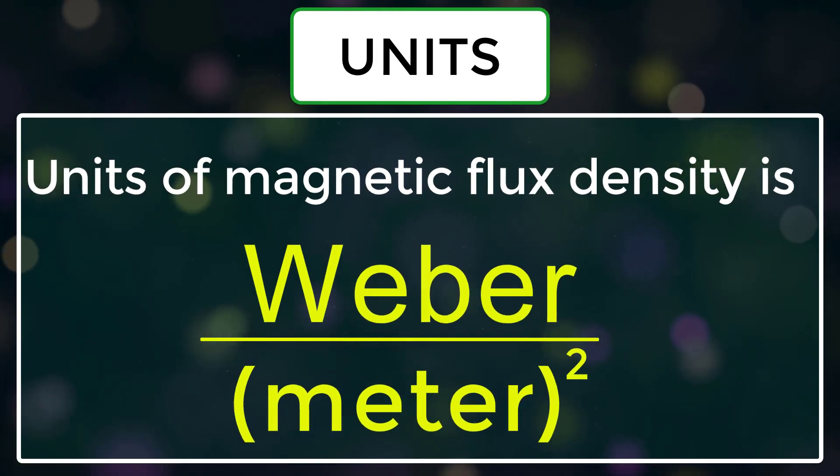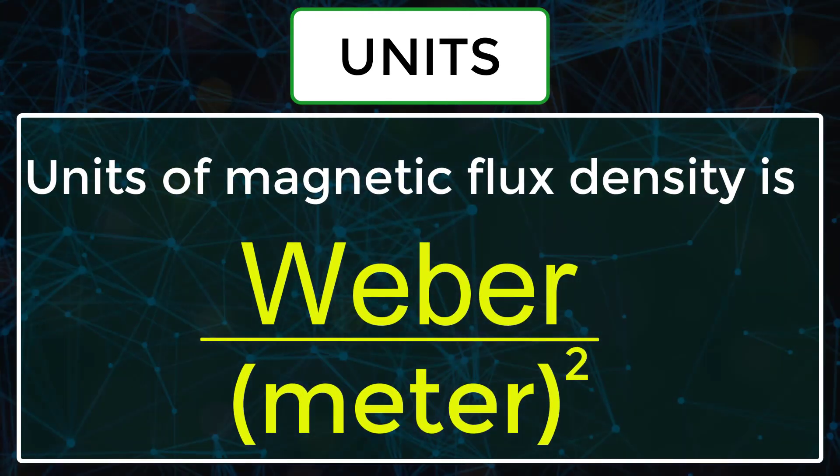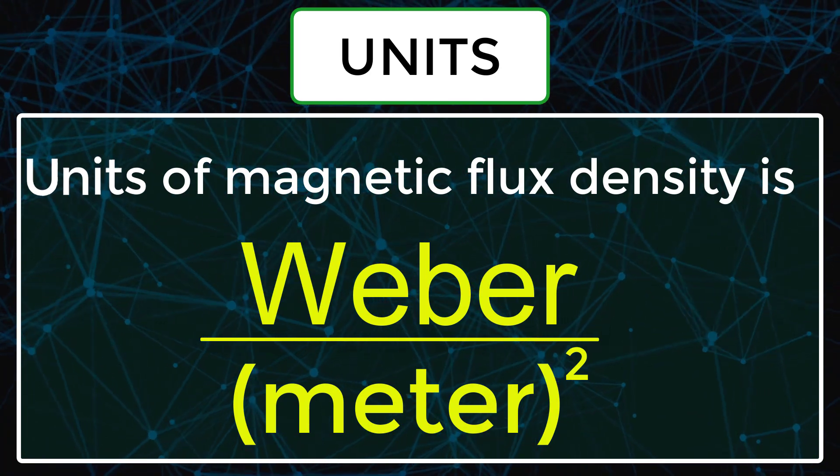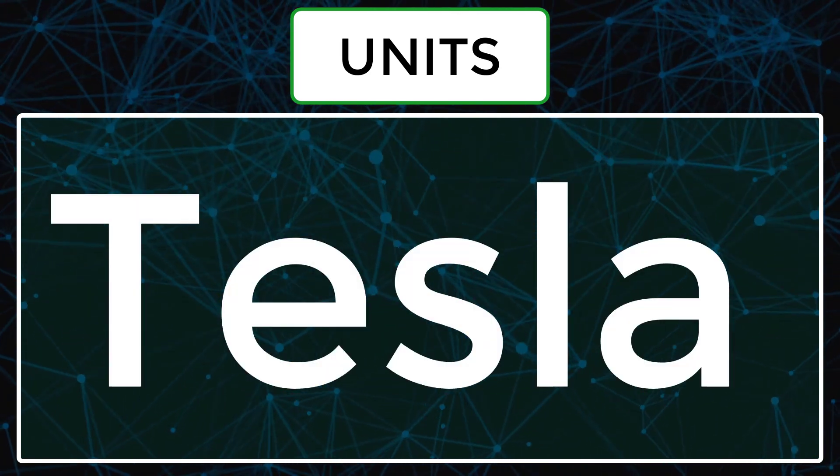Units of magnetic flux density is weber per meter squared. It is also called Tesla.